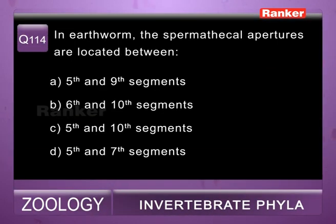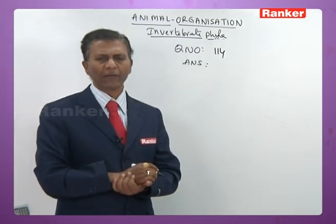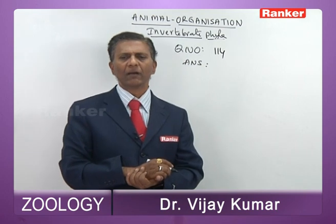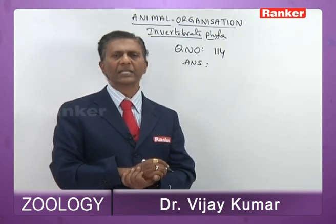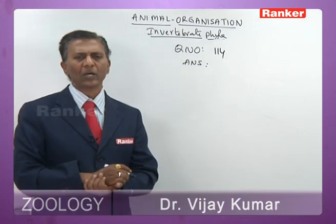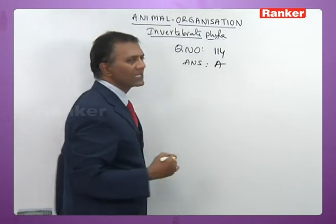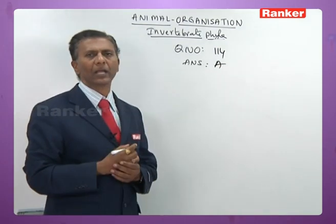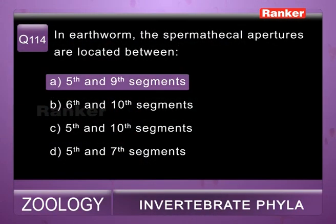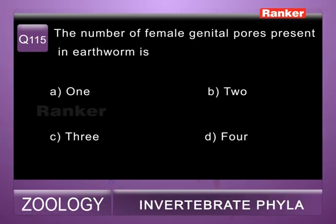Question 114: spermathecal apertures in earthworm are located between — the spermathecal apertures are at intersegmental grooves 5/6, 6/7, 7/8, and 8/9. So the answer for 114th question is a — between segments 5 to 9.